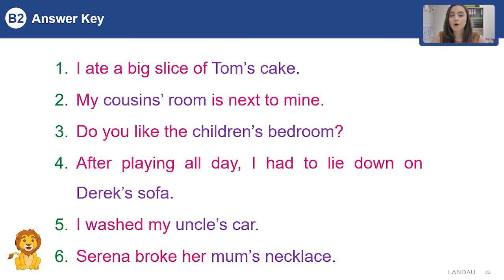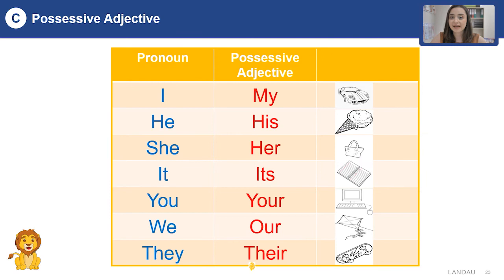We have already learned that possessive nouns have apostrophe and S. For example, this is my sister's dress — so the owner is my sister. But we can replace a noun with an adjective. These adjectives are called possessive adjectives. You can say 'this is her dress.' Let's have a look at other possessive adjectives.